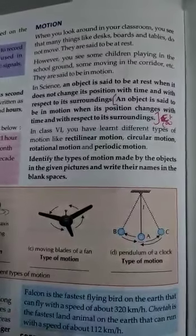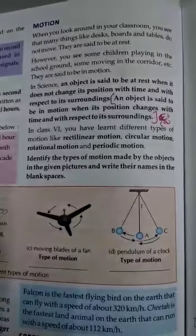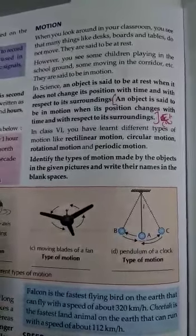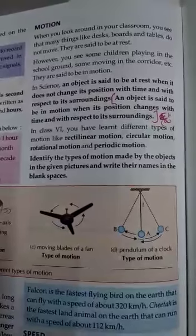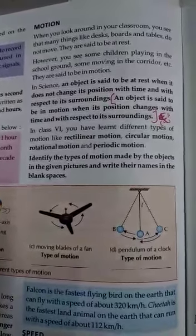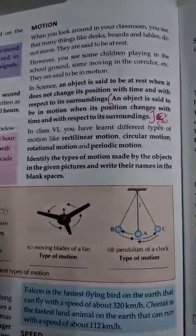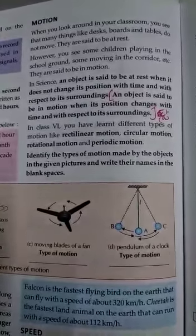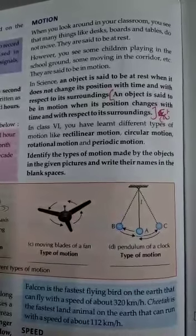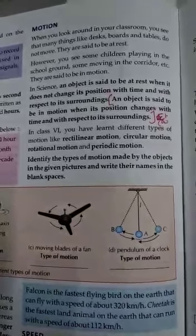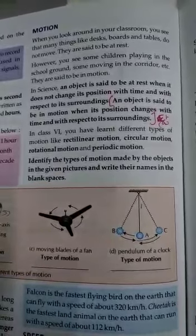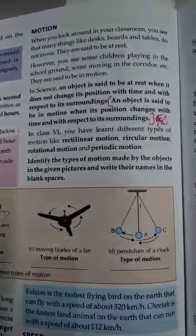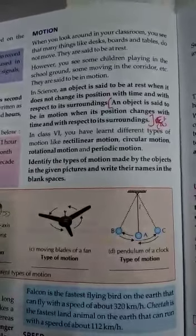Motion ka kya matlab hai? Jab koi cheez apni jagah se dusri jagah par hilti dulti ya chalti firti, move karti dikhai deti hai, to woh kehlata hai motion. In science, an object is said to be at rest when it does not change its position with time and with respect to its surroundings. An object is said to be in motion when its position changes with time and with respect to its surroundings.